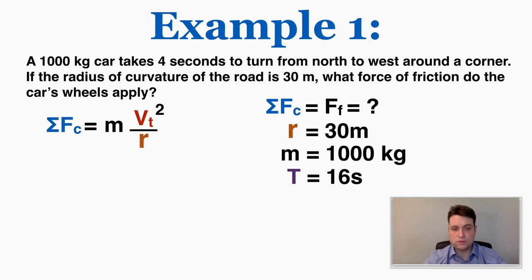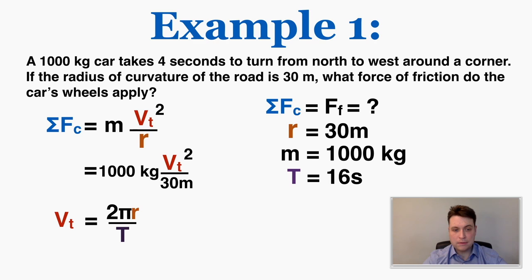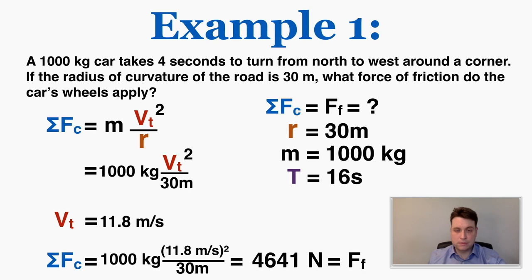Plugging in the values I get v_t = 11.8 m/s. Plugging that into the centripetal force equation I get that the centripetal force on the car is 4,641 N. A lot of this unit is like this — picking out individual pieces of information and plugging them into equations. There are some conceptual parts, but mostly it's learning to recognize which variable is which and plugging in the information correctly.